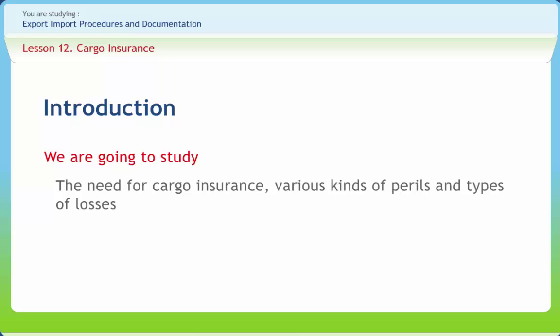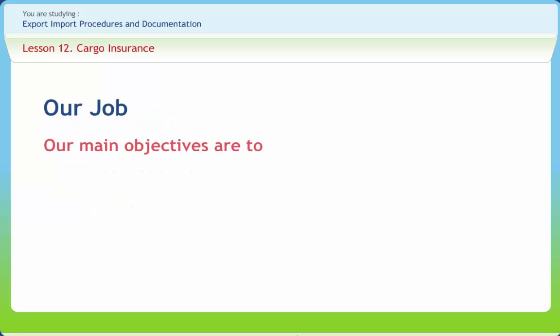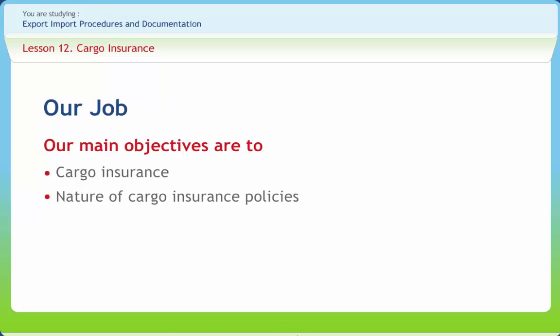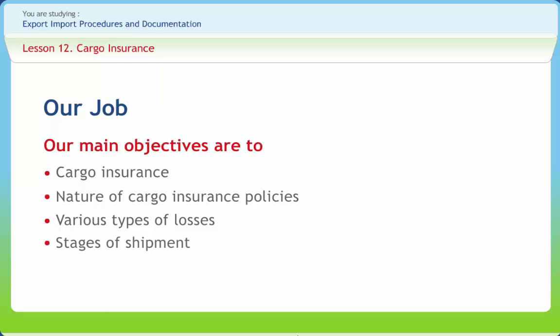In this lesson we will learn the need for cargo insurance, various kinds of perils, and types of losses. We will also be acquainted with the documentation procedure for filing insurance claims. After studying this lesson you should be able to understand cargo insurance, the nature of cargo insurance policies, various types of losses, and stages of shipment.